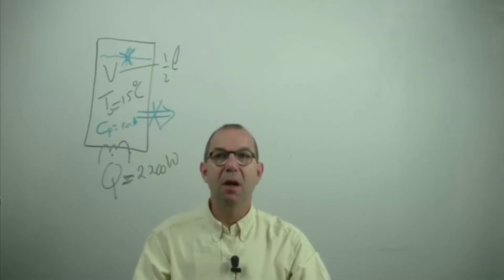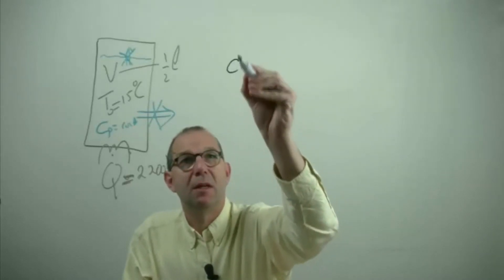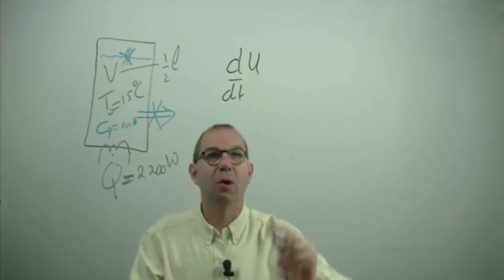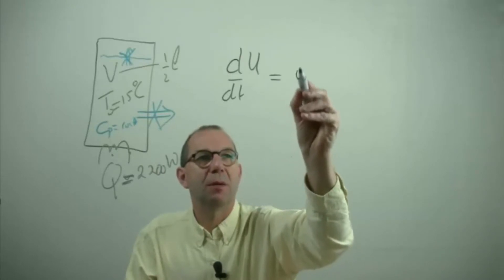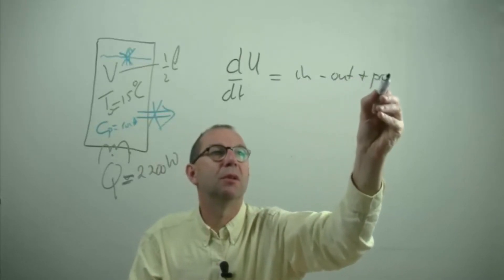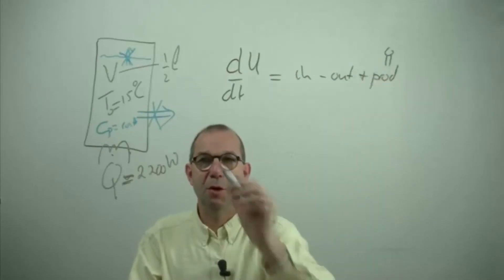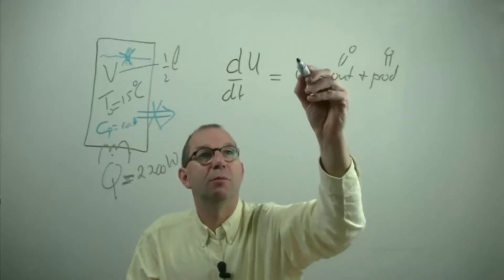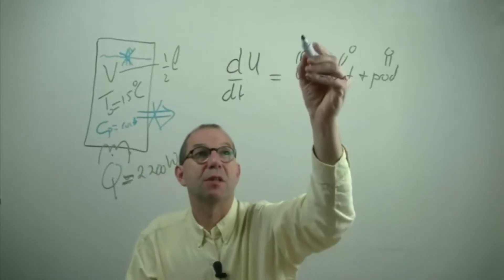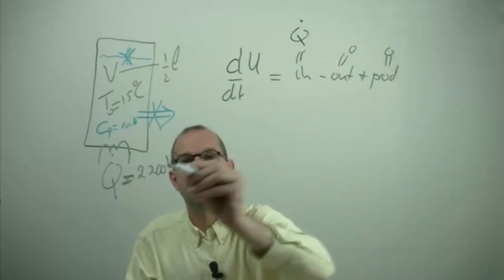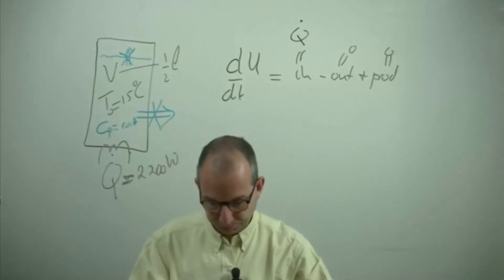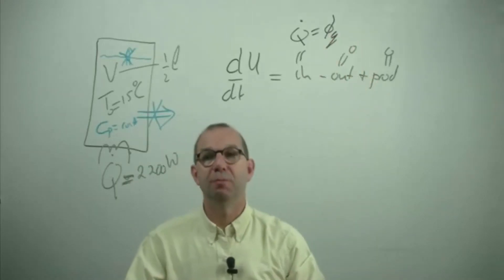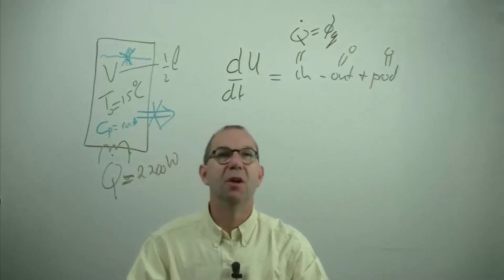If we have this, we can set up our energy balance. dU/dt — because we're only considering internal energy, no kinetic, no potential and so on — equals what comes in minus what comes out plus what you produce. Well, you don't produce anything; there's no energy production inside, there's nothing flowing out. The inflow is what the heater gives us — that's what the heating element is for. So Q-dot in joules per second is the inflowing energy, or the inflow of heat phi sub q.